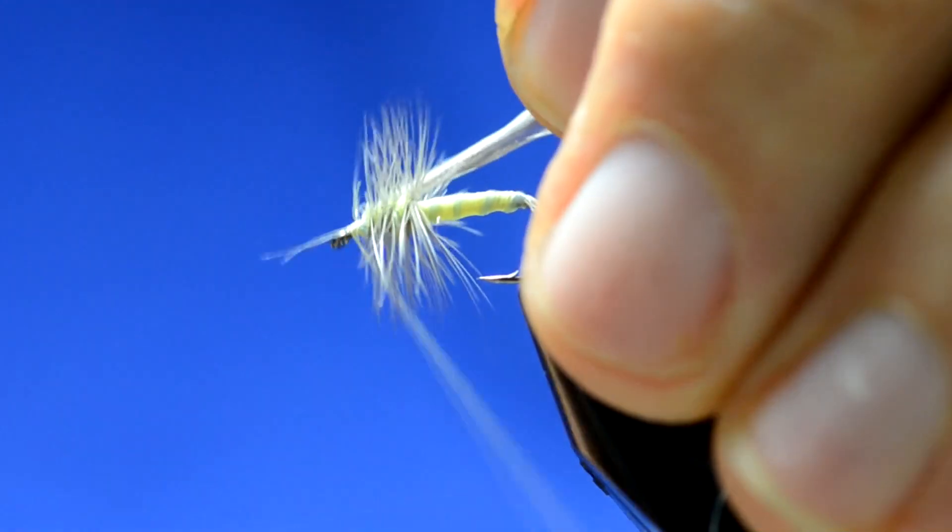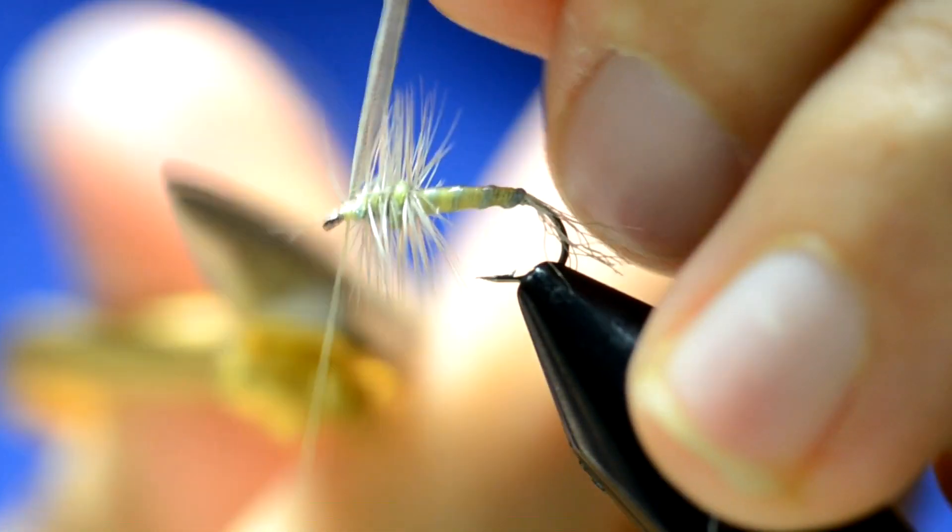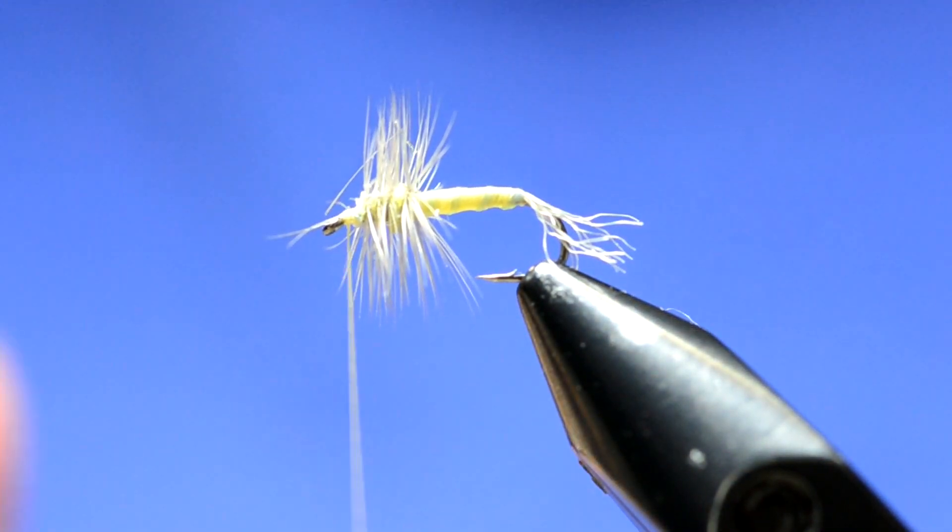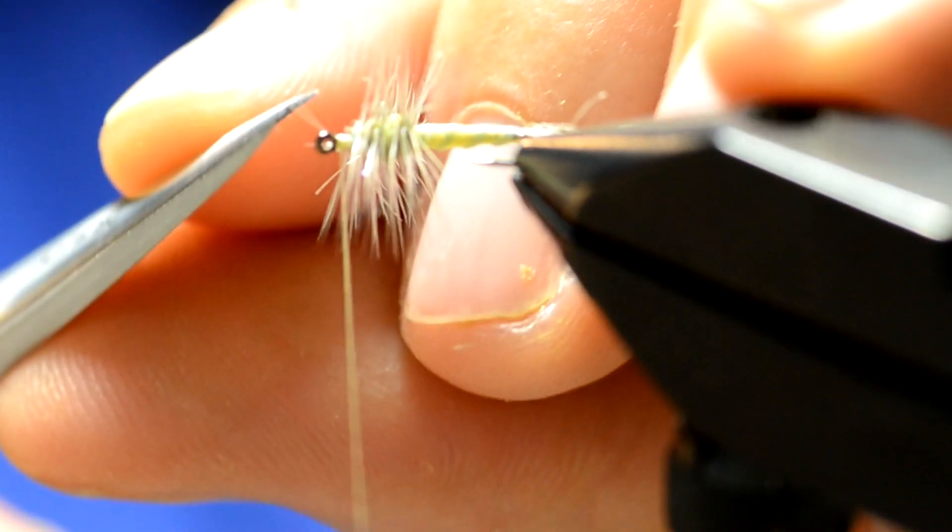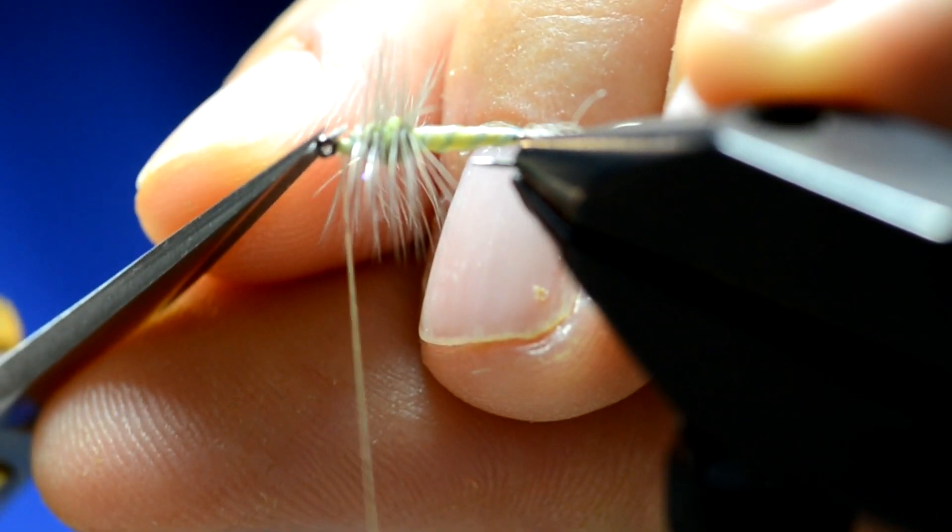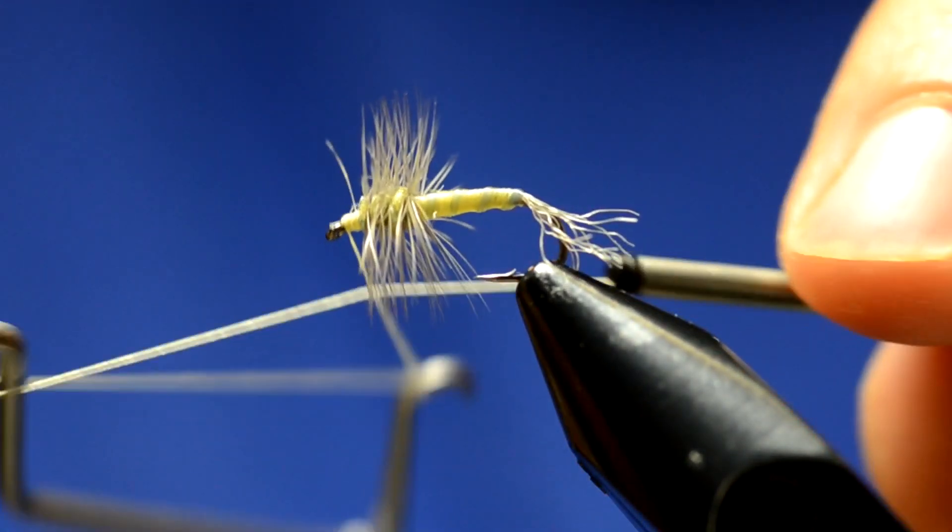As you want to do with hackle, you need some locking loops in front. Then we'll just clean up some of these little fibers that got trapped and throw on our whip finish.